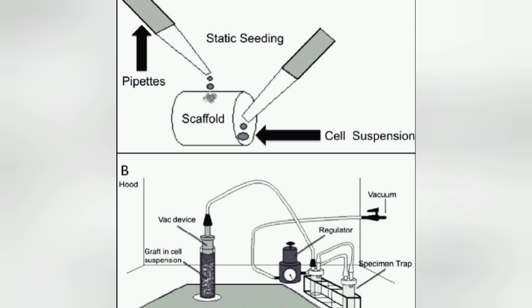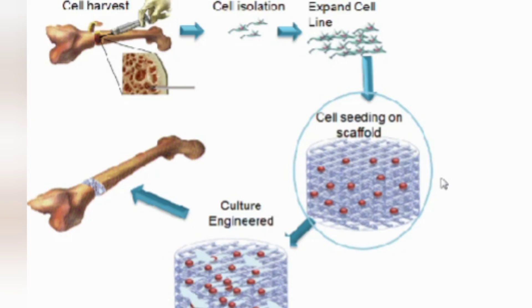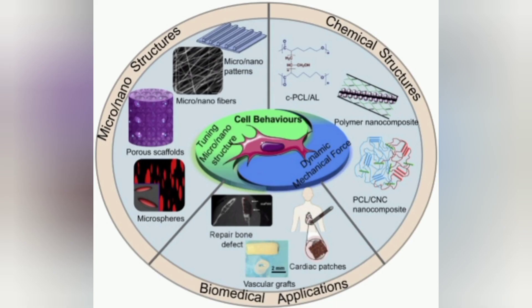The stem cell is also called the seed cell and is the starting point of the process. The scaffold holds and supports the seed and steers its growth into the desired shape, size and location. Amongst scaffold materials like polymer, ceramics, metals and composites, each has specific resorption, surface reactivity and biocompatibility properties.